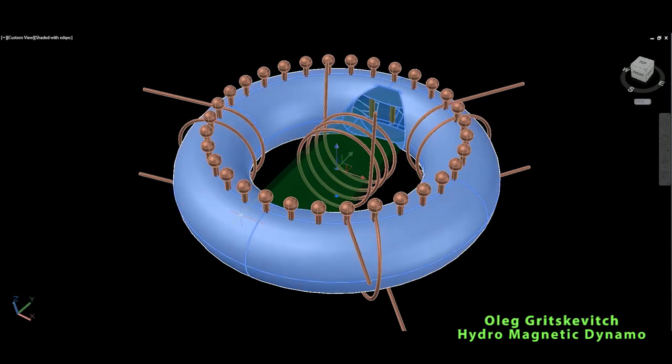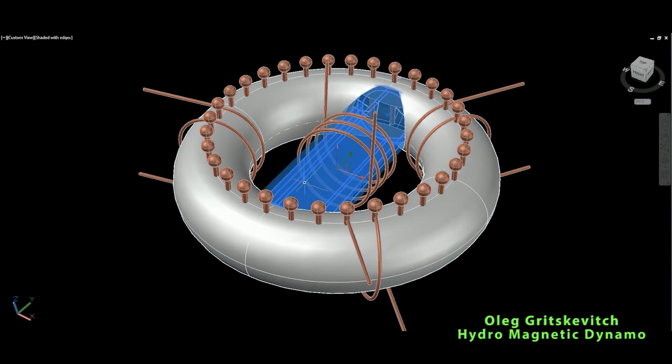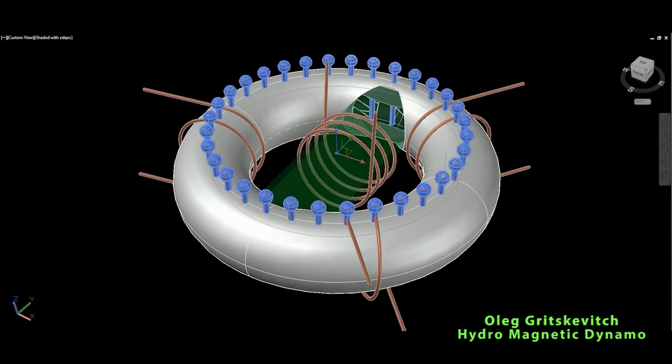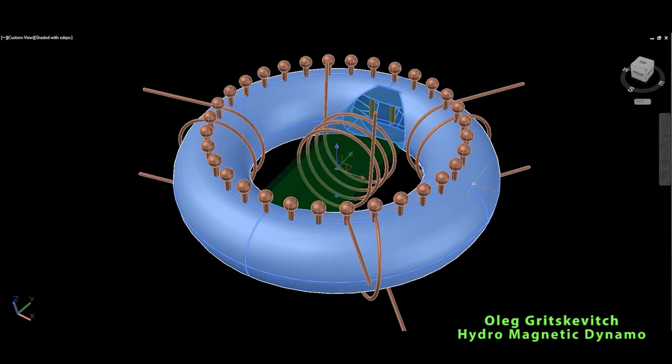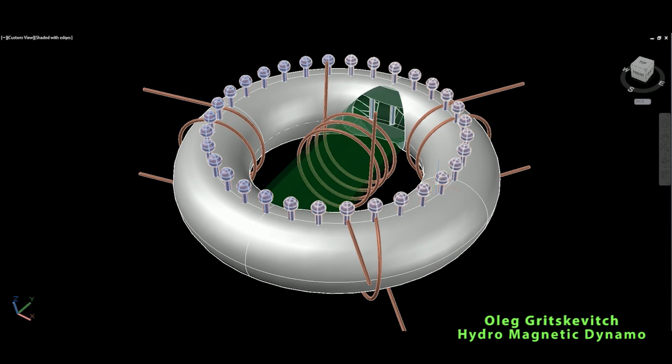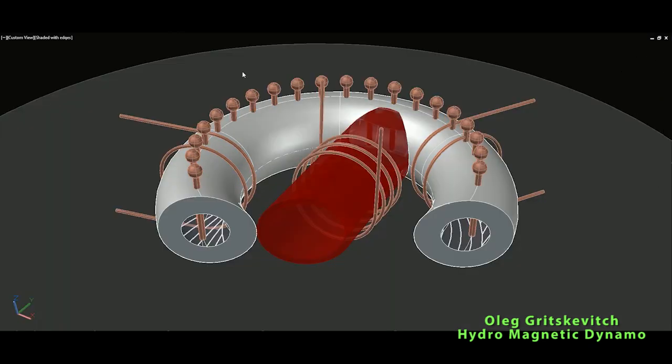I will make it transparent and you can see around this torus are some windings. There are also electrodes. Inside the torus there is a hole and inside is a polar liquid, and these electrodes are placed in this liquid.